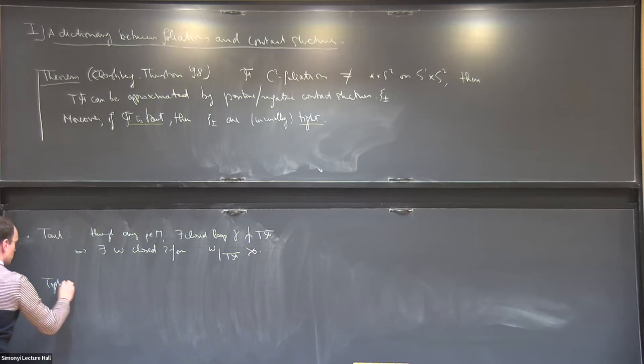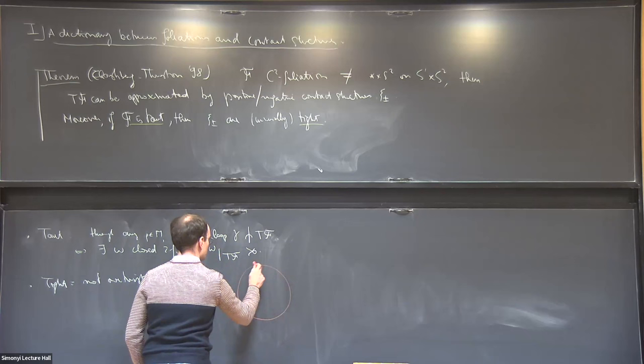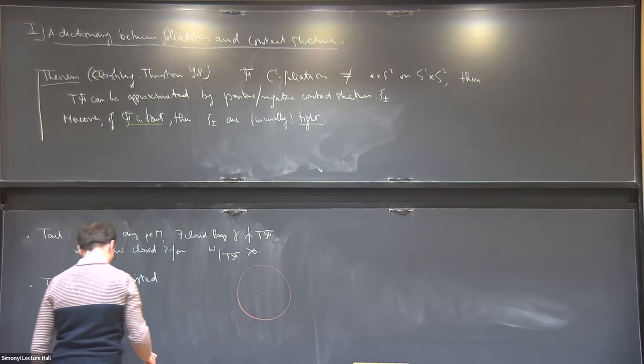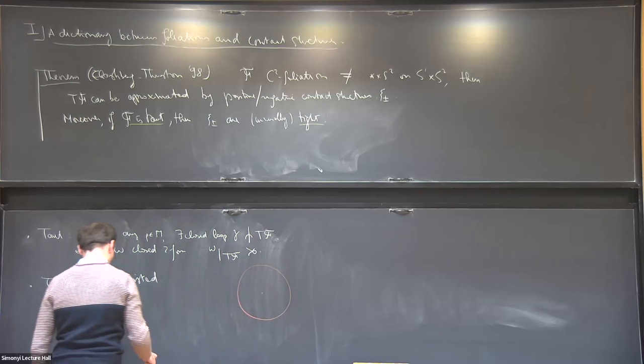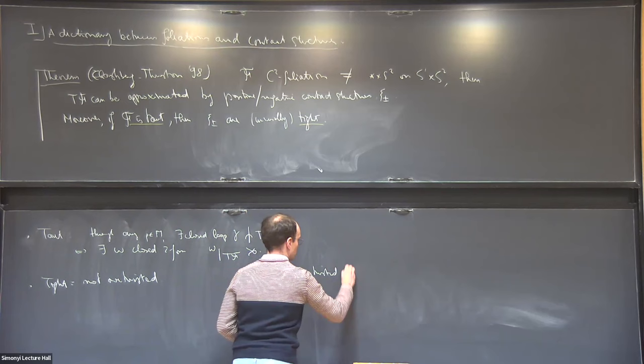And tight — I'm going to give you the standard non-definition: it means not overtwisted. Overtwisted means that there exists an embedded overtwisted disk — an embedded disk such that the contact structure is tangent to the boundary of the disk and the characteristic foliation looks like it's twisted.